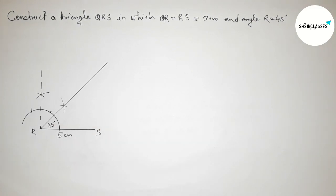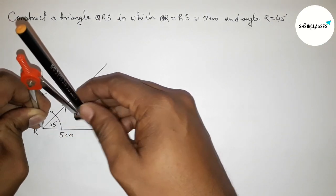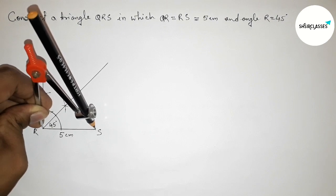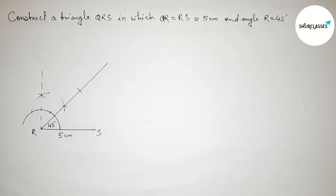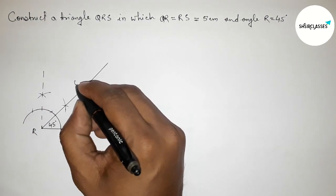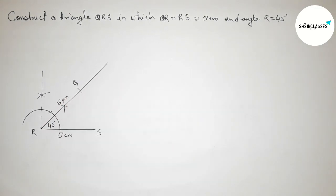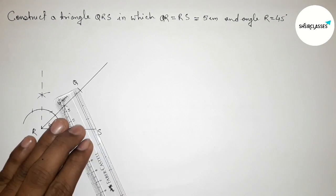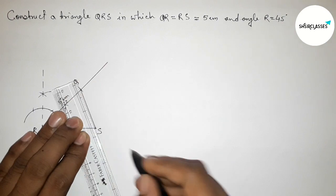Now QR equals 5 centimeters. Taking the length RS equals 5 centimeters — both are equal — and cutting here along the 45 degree ray. Taking point Q, this is 5 centimeters. Next, joining side QS to complete this triangle QRS.